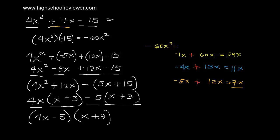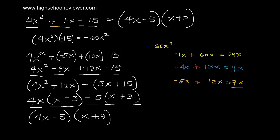Therefore, 4x squared plus 7x minus 15 in factored form is the quantity of 4x minus 5 multiplied by the quantity of x plus 3. This is our final answer.